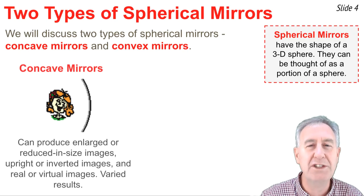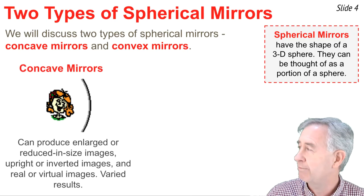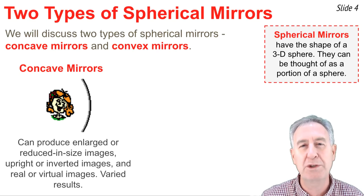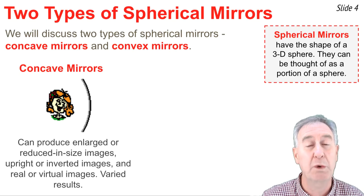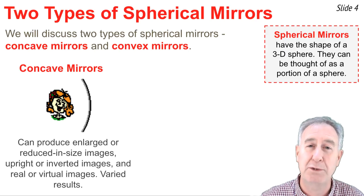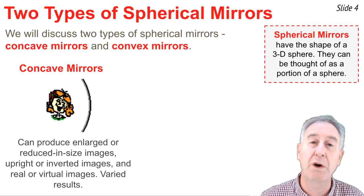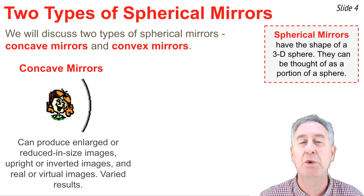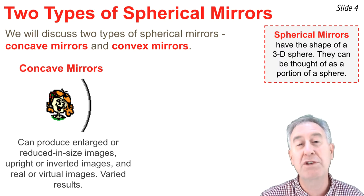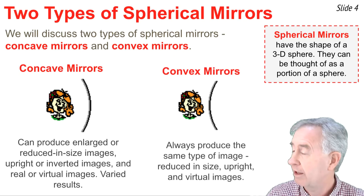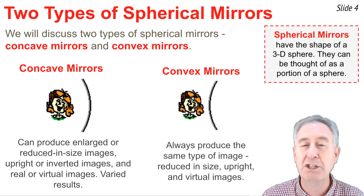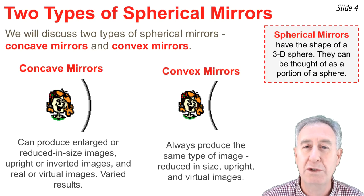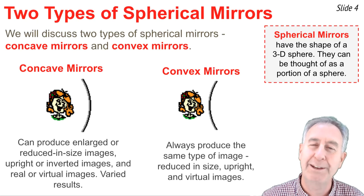If you silver the inside of the sphere, you have a concave mirror. Concave mirrors are quite interesting because they produce varied results — images that can be magnified or reduced in size, inverted or upright relative to the object, and real or virtual. If you silver the outside of the sphere, you get a convex mirror. Convex mirrors always produce images that are reduced in size, upright, and virtual.